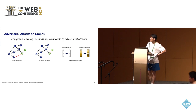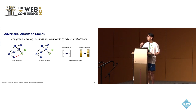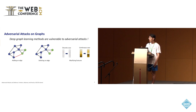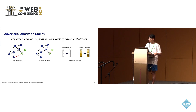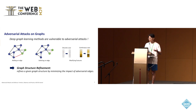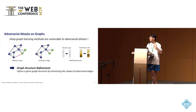For the preliminary knowledge, adversarial attacks on graphs indicate the implicit perturbation both on the graph structure and node features, and it is well known that deep graph learning methods are vulnerable to adversarial attacks. To mitigate such data issues, graph structure refinement methods have been proposed to refine a given graph structure by minimizing the impact of adversarial edges.